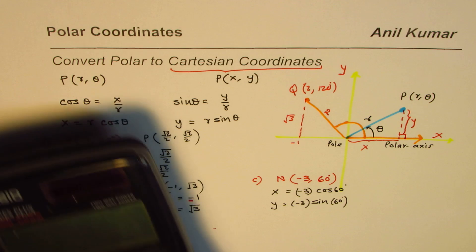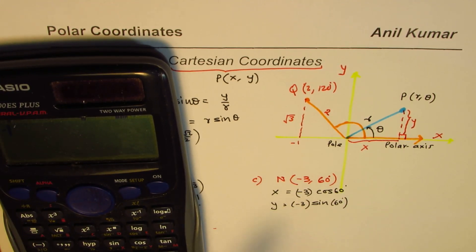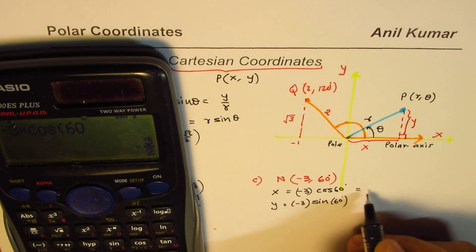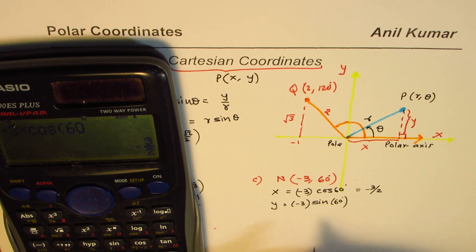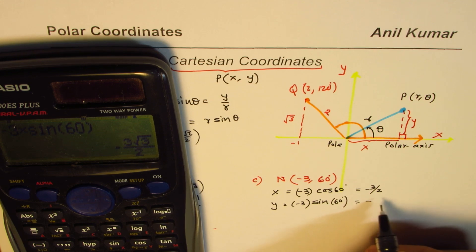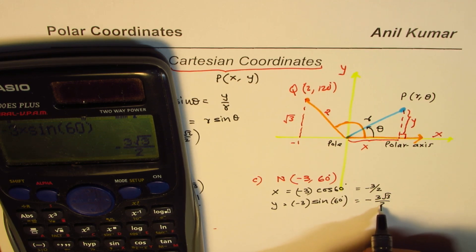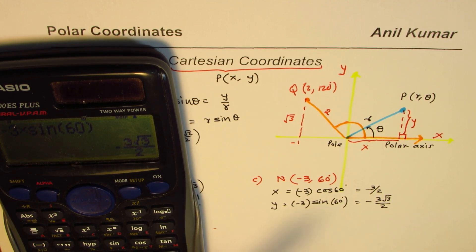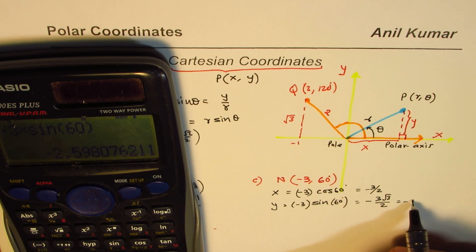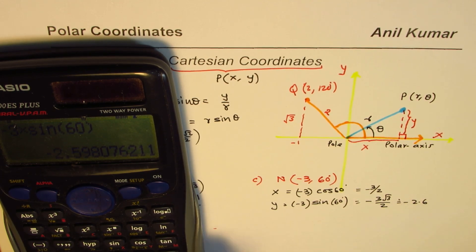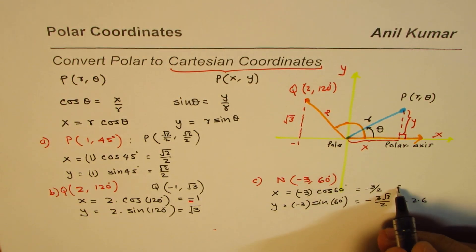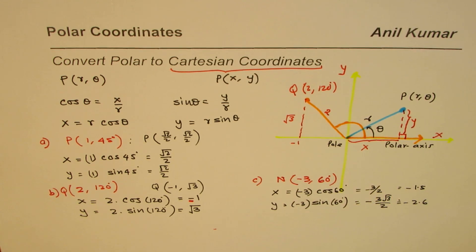Using the calculations: negative 3 times cos of 60° gives us -3/2, and negative 3 times sine of 60° gives us -3√3/2. Converting to decimals, that is approximately -1.5 and -2.6. So we get both negative values here.